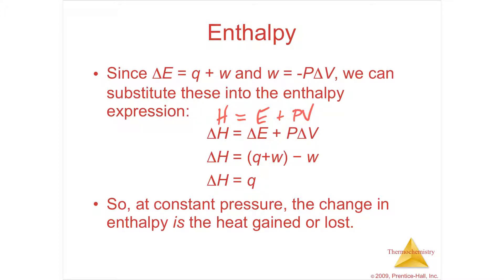In the case of constant pressure — like atmospheric pressure in a normal room with Bunsen burners and open glassware — enthalpy essentially is the heat into a system or the heat out of a system. That's very useful. So at constant pressure, the change in enthalpy is the heat gained or the heat lost.